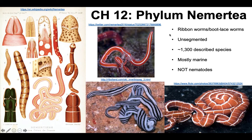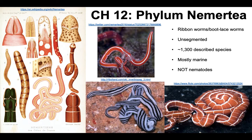Common names for nemertians are ribbon worms or bootlace worms, as you can see from these pictures. You can tell they're distinct from annelids because they're unsegmented — annelids are segmented worms. There are about 1,300 described species. Most of these species are marine, and they are not nematodes. Their name may be very similar, but nemertians are a completely separate group.